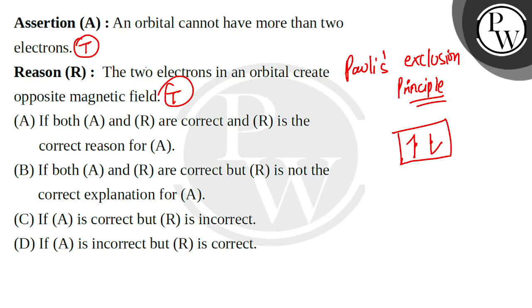Both assertion and reason are correct, but the reason does not explain the assertion. That's why this option is correct. The rest are incorrect.